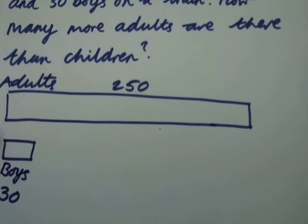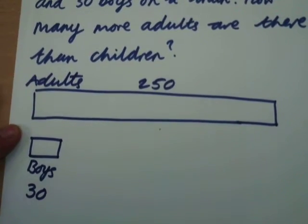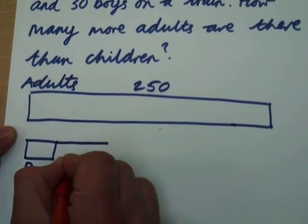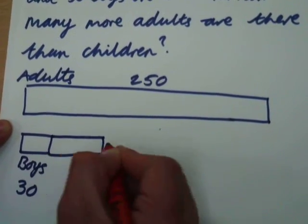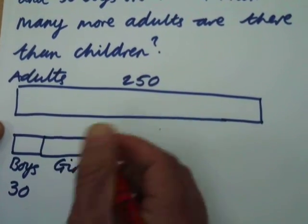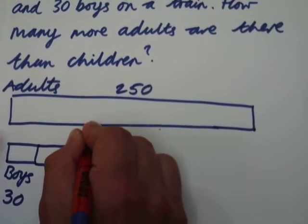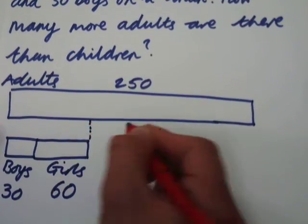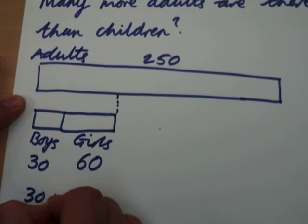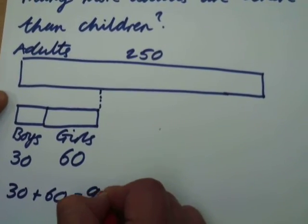The next part of the question says that there are double the amount of boys — there are 60 girls. So I'm going to draw a bar that's roughly double that amount and put 60 underneath. So up to this part of my bar that is going to be worth 30 add 60, which makes 90 in total.